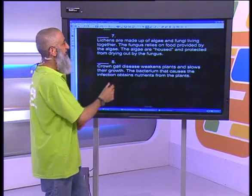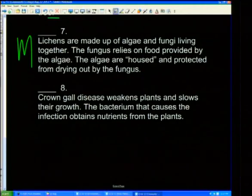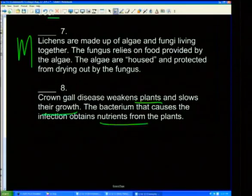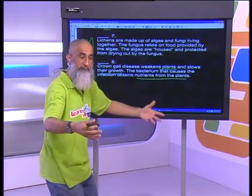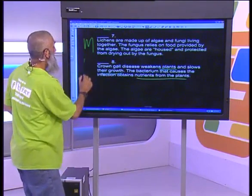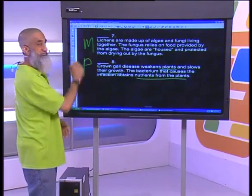Lichens are made up of algae and fungi living together — we've done that already: mutualism. Crown gall disease weakens plants and slows their growth. The bacterium that causes the infection obtains nutrients from the plants. Gall disease weakens — harm. Gets nutrients from the plants — benefit. One harmed, one benefiting: parasitism.